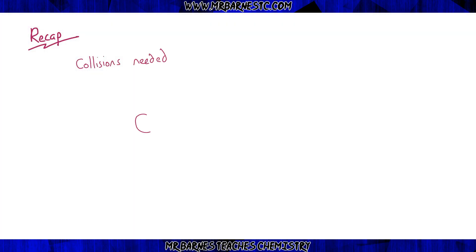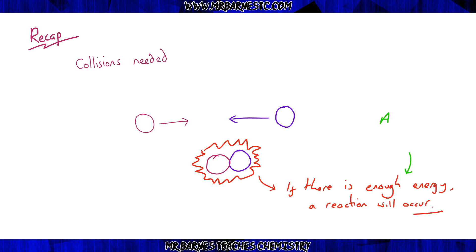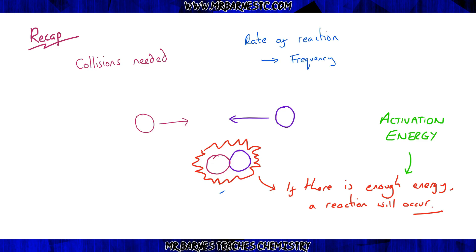If we start off with a recap, you should remember that for a reaction to occur you need to have collisions — particles bouncing into each other. Those collisions also have to have enough energy for that reaction to occur. That energy is called the activation energy. There are two things that can affect the rate of reaction: the frequency, which is the number of collisions per second, and the energy, which we've just talked about.